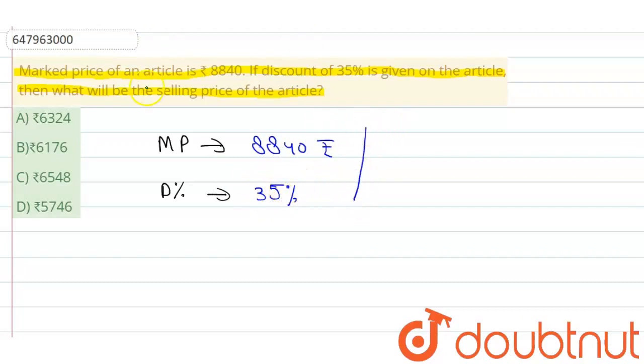तो value पूछी गई हमसे selling price की. Selling price बराबर होता है marked price into (1 - discount percentage/100).